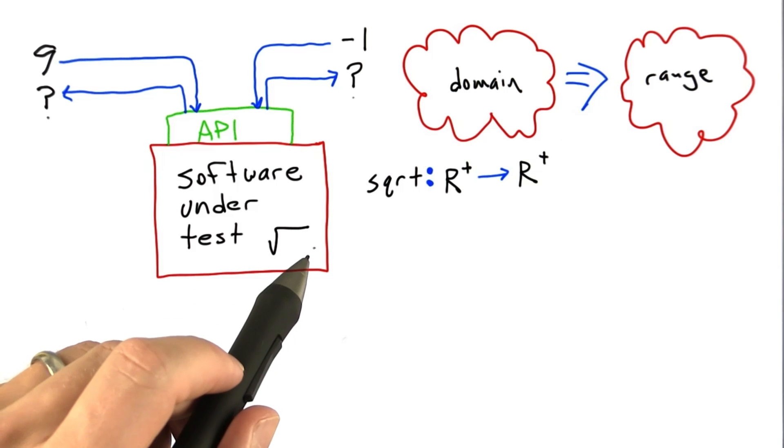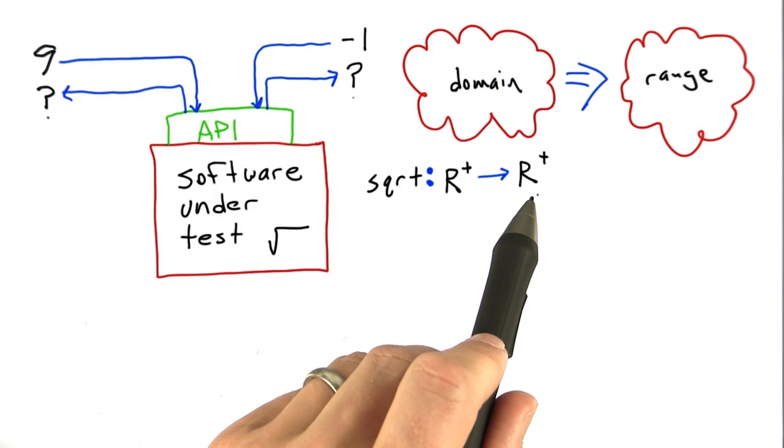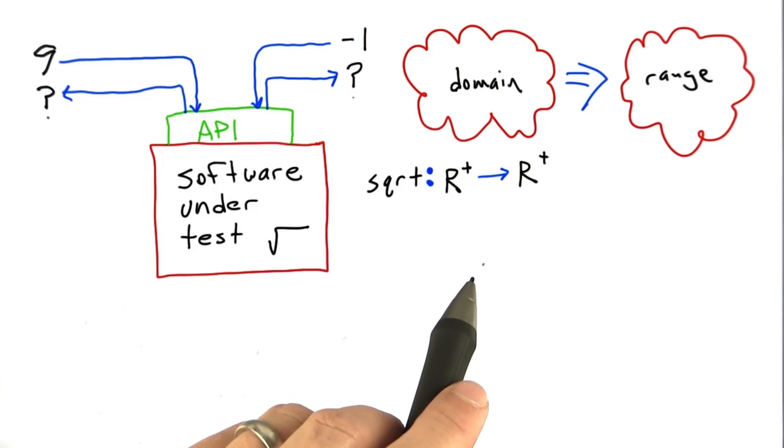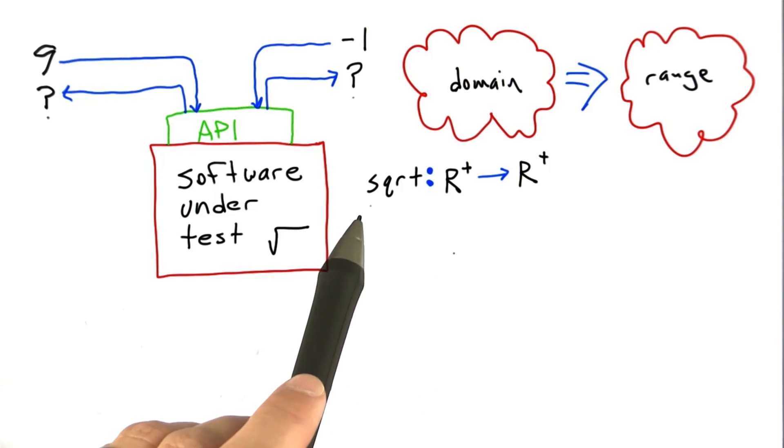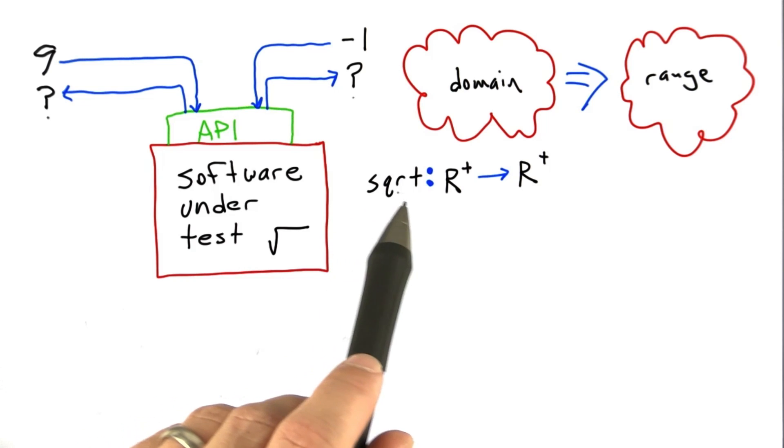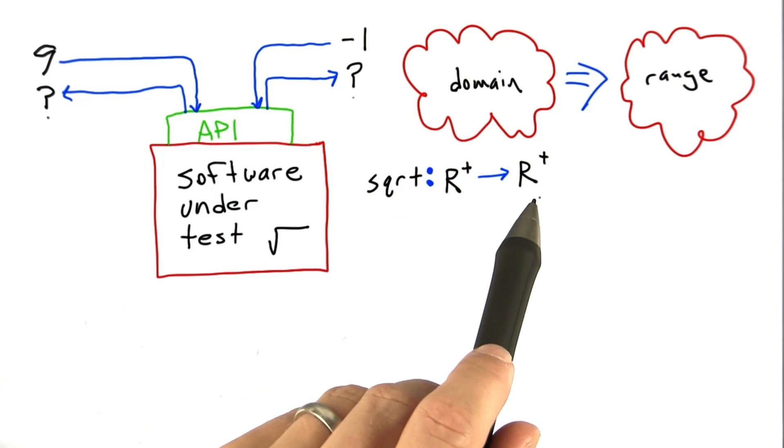Earlier we said we'd like to return the positive answer for square root, and we're probably not going to compute the square root of a negative number. We can account for both facts in the square root's domain and range by making it a function from non-negative real numbers to non-negative real numbers.